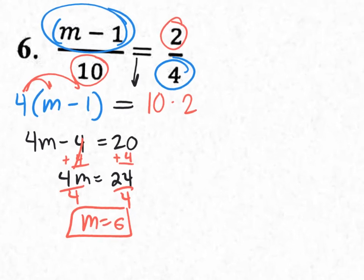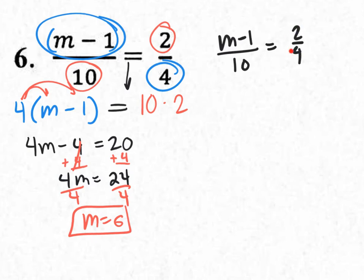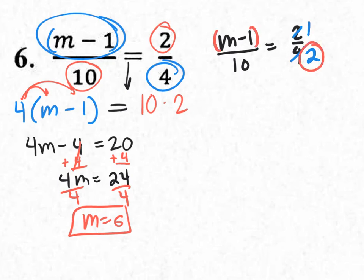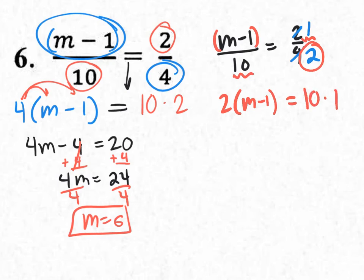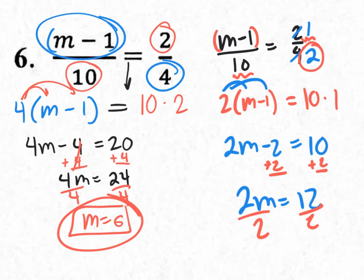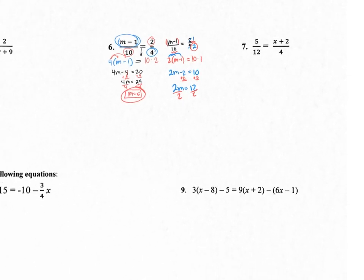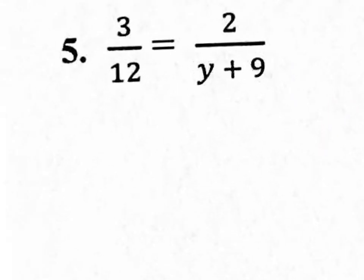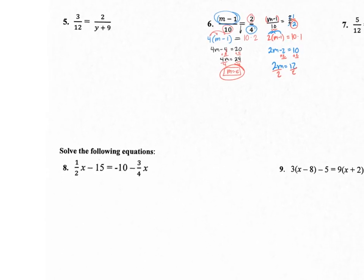There's also an easier approach: reduce 2 fourths to 1 half first. Then cross-multiply: 2 times (M minus 1) equals 10 times 1, which is 10. Distribute: 2M minus 2 equals 10. Add 2: 2M equals 12. Divide by 2: M equals 6 — the same answer. Whenever you see a fraction that can be reduced, reducing it makes the work a little easier. This also applies to number 5, where you can reduce 3 twelfths to 1 fourth.